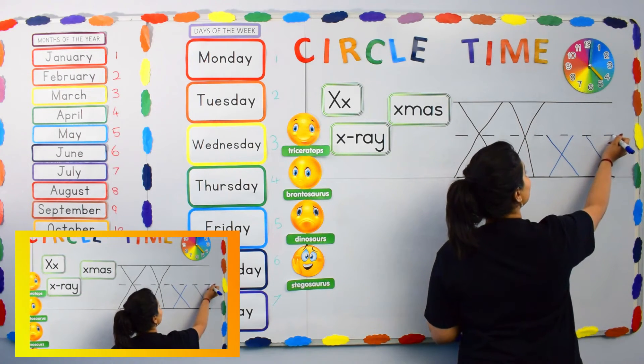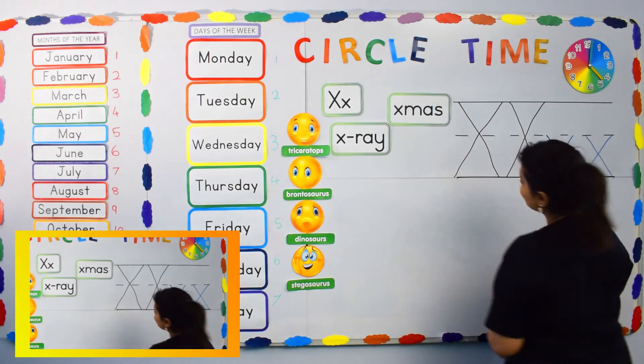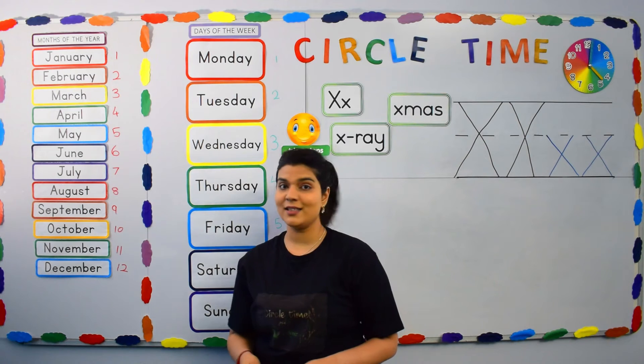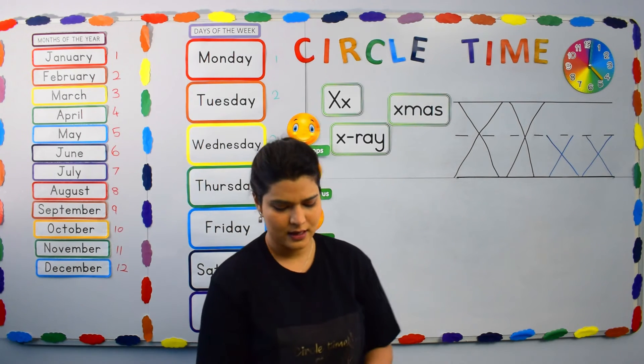One, two. And that is how we draw the letter X. Do we draw letter X? No, we write letter X.